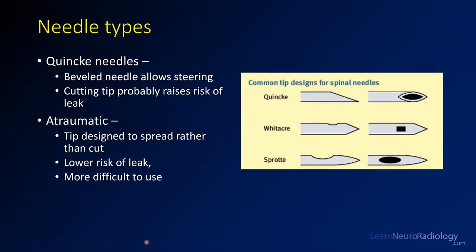Needle types are something you definitely need to know about. The most common spinal needle is the Quincke needle, which has a bevel tip — it's a cutting needle and the opening for fluid is inside the bevel. These are used most commonly because they allow steering and are the simplest to use. There is evidence they carry a raised risk of CSF leak after the procedure, but the ability to steer makes most radiologists continue to use cutting needles.